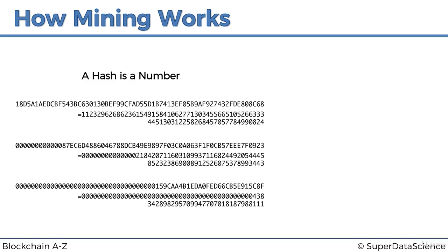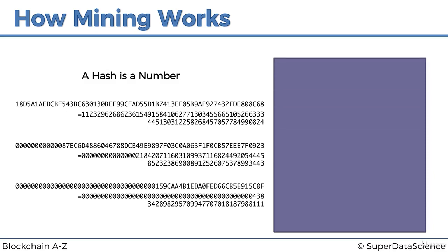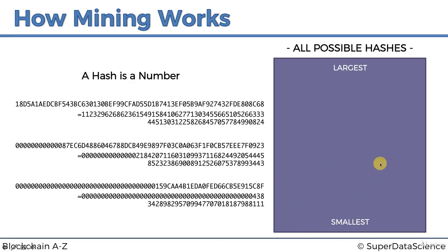We've identified that a hash is a number — and that's valuable because now we can actually draw hashes. We know they're ordered: some are smaller, some are bigger. So let's draw a pool of all possible hashes. At the bottom we have the smallest ones, at the top the largest. It starts from all zeros and goes all the way up — like a snake — increasing until we reach the very top, where all digits are FFFF.